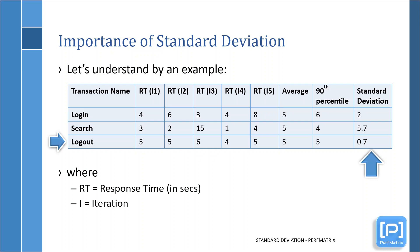Now let's answer the questions we parked. The first question was: why is average response time not considered in performance testing? After looking at this table, if I ask which transaction performed well, what would your answer be — all? But that is not true. Because login and search transactions touch peak values of 8 and 15 seconds respectively, which are too high. So we can conclude that average response time cannot tell us whether the system or application is consistent or not.